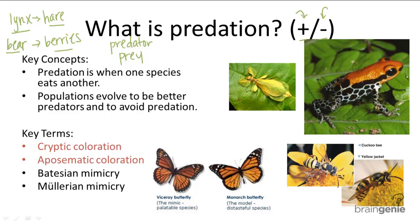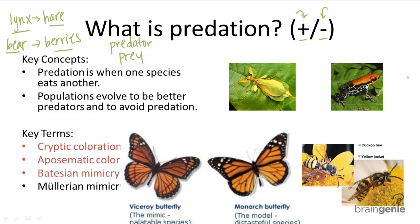Batesian mimicry is a copycat type of coloration, where a harmless organism — like the viceroy butterfly — will copy a harmful organism, like the monarch butterfly. These two butterflies look very similar, and to a predator it's really hard to tell which one is real. Monarch butterflies aren't very tasty and are kind of poisonous, whereas viceroy butterflies are tasty and completely harmless. But a predator who knows the monarch butterfly is dangerous may not recognize that the viceroy butterfly is different.